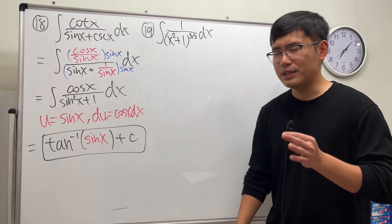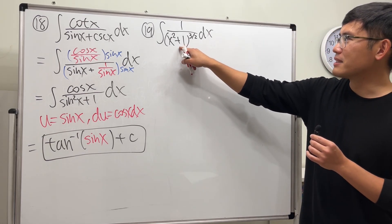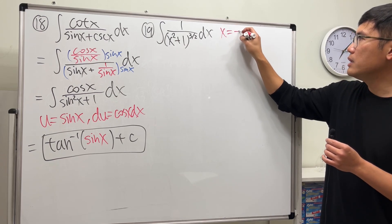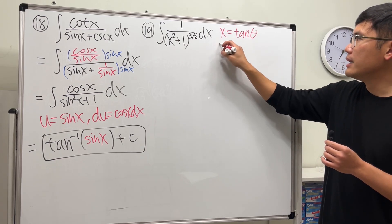So let's use trig substitution. Because this is sum of two squares, I will take tangent for that. And it's just 1, so I will put x to be tangent theta. dx will be secant squared theta d theta.